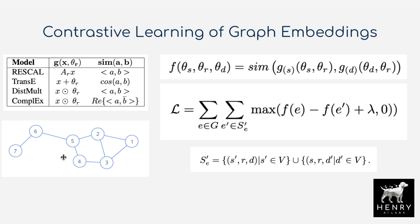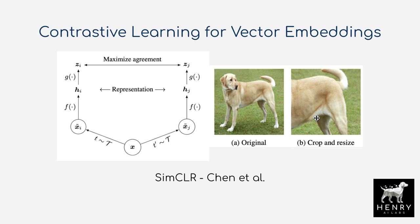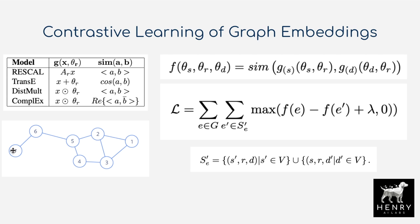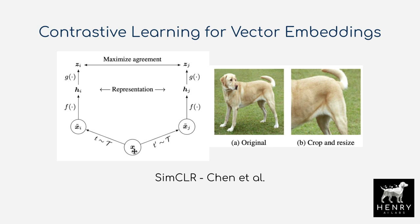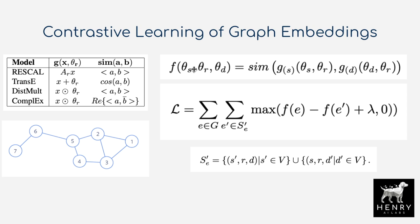Transitioning to graph embeddings, we want to align the similarity between a source and a destination node. We use the relations on the graph to form our positive pairs. Rather than passing inputs through a neural network, we go right to the vector representation: theta sub S is the vector of the source node, and we also have an embedding for the relation type for multi-relation knowledge graphs. Different graph embedding papers like TransE and ComplEx define different graph operator functions for this alignment.